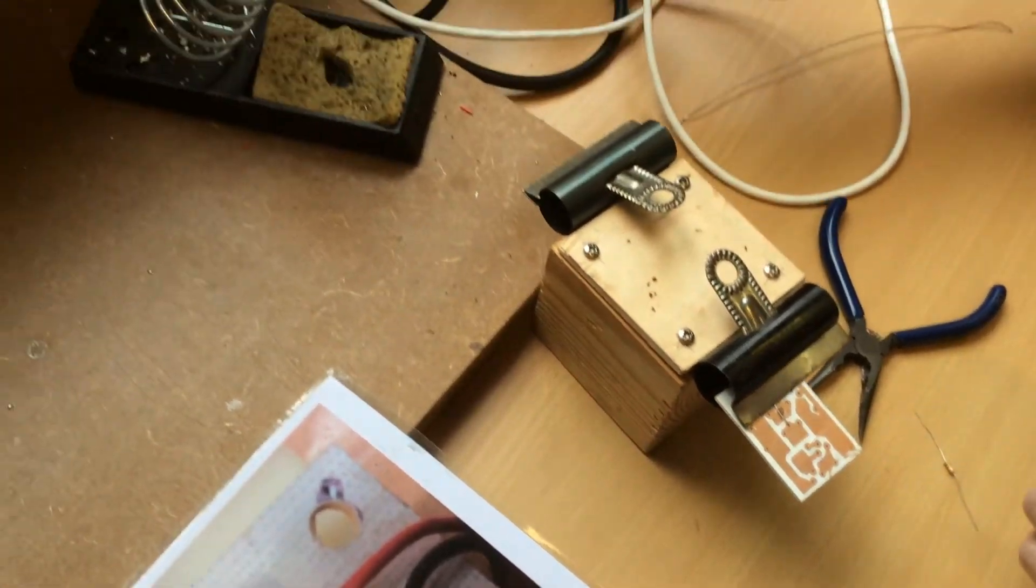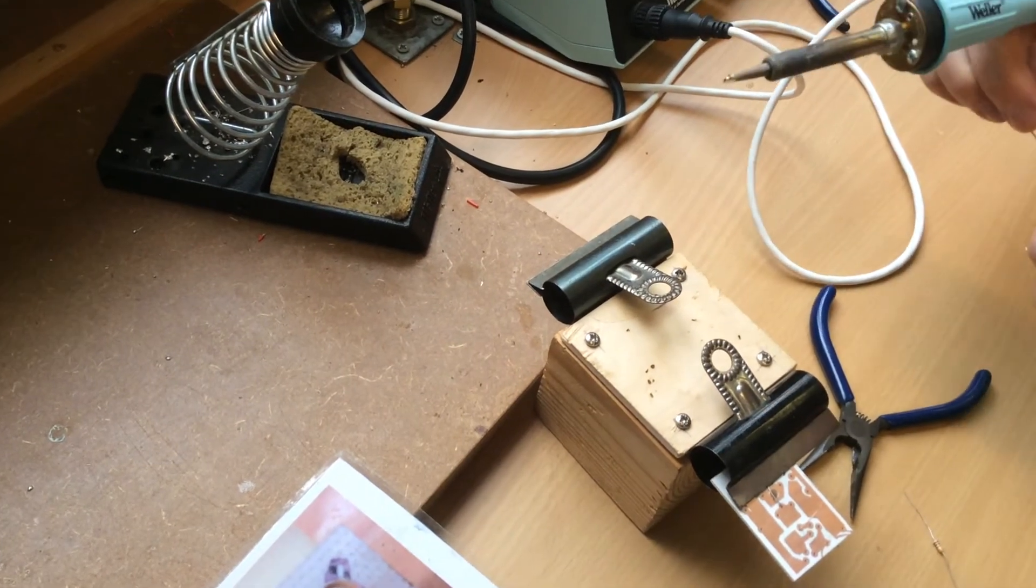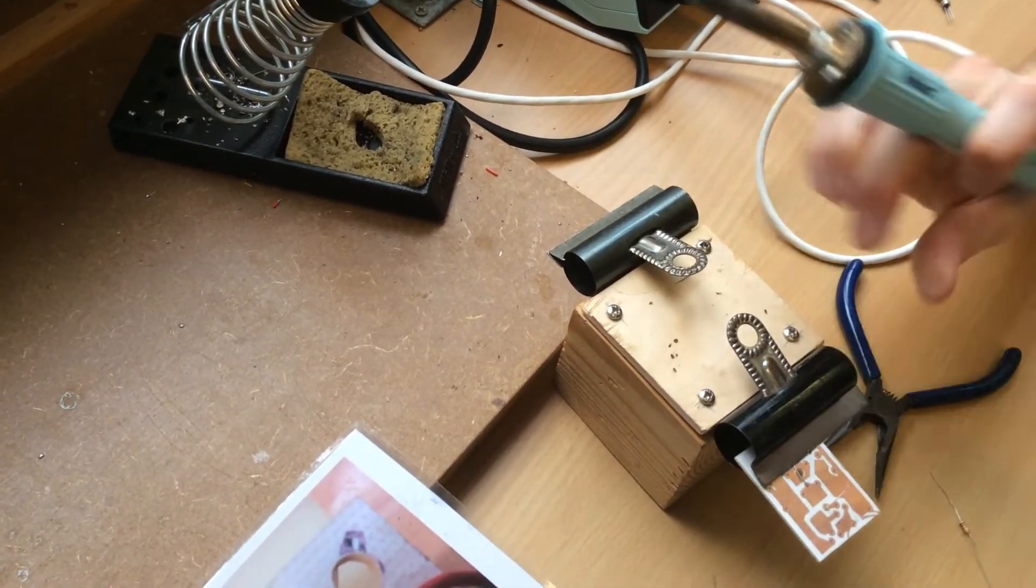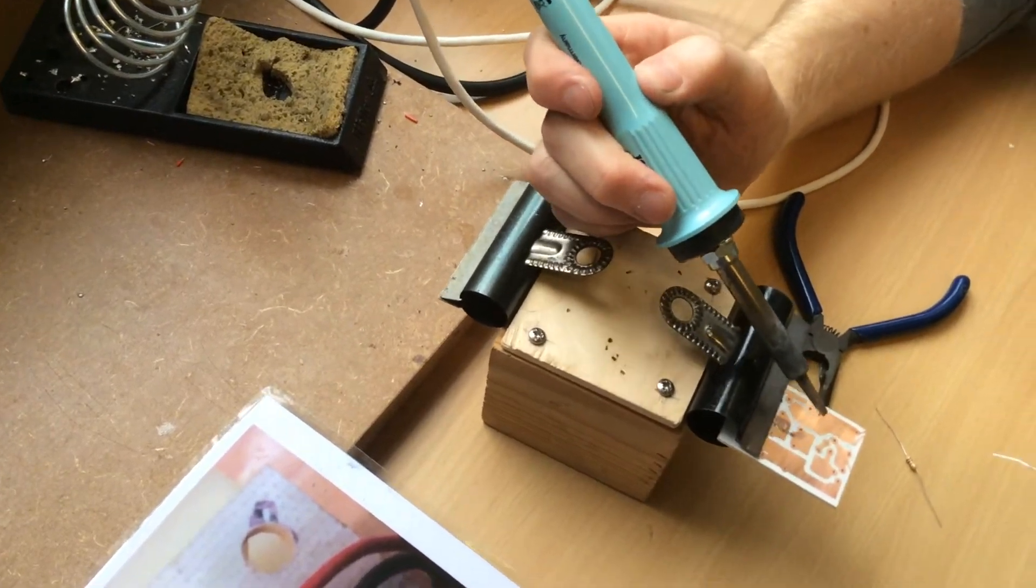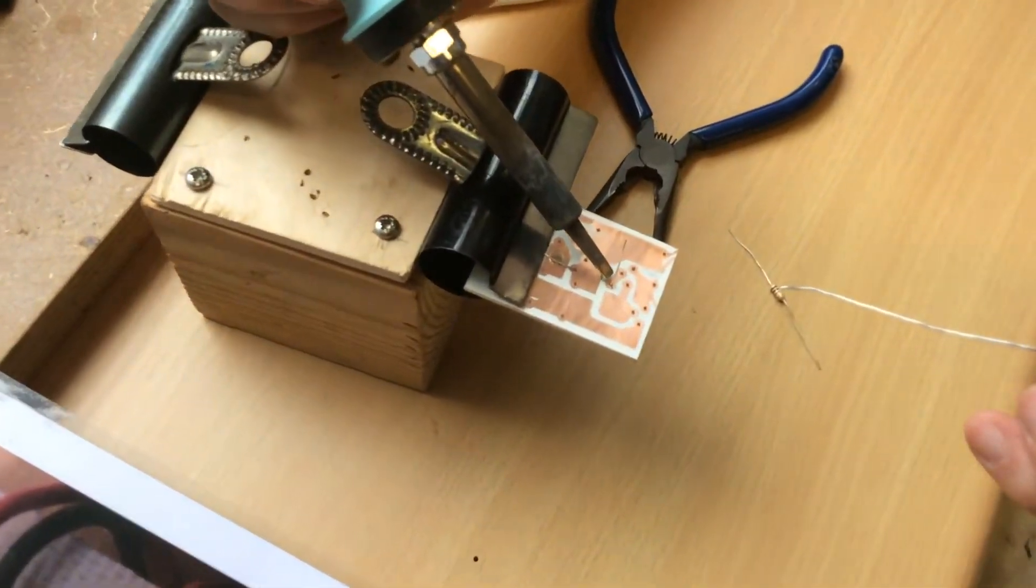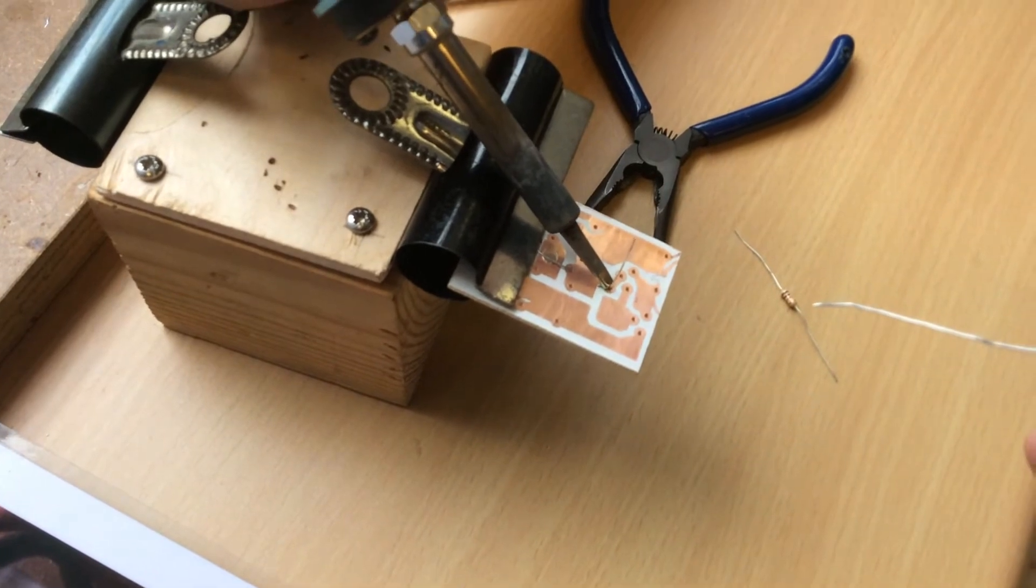Take the iron, make sure the tip's nice and clean. Now place the solder and iron on one side, heat for three seconds and then melt some solder on the other side. So on the copper, against the wire.